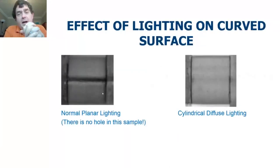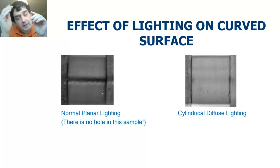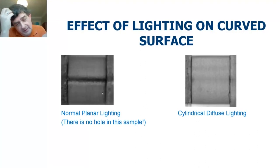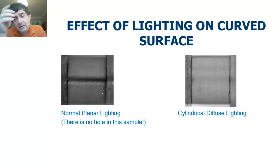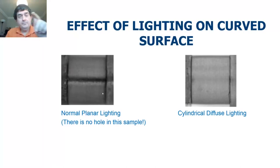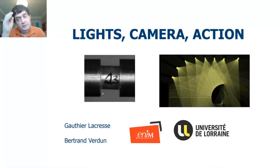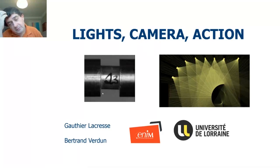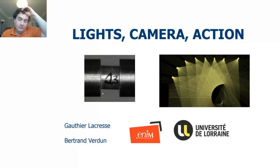We were very interested in seeing how damage occurred, so we looked at lighting and high-speed photography. On one side we have normal flat light illuminating the sample — you can see a black line across the middle due to plain light on a curved surface; there's no hole in that sample, it's just an illumination effect. On the right-hand side we used cylindrical diffused light to illuminate all parts of the surface evenly. This work was done in collaboration with intern students Gautier and Bertrand from the University of Lorraine in France.